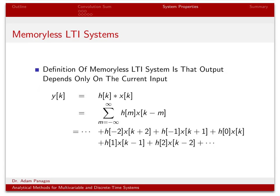One of the ways we can classify a system is if it's memoryless or not. The definition of a memoryless LTI system is that the output y[k] only depends on the current input. We know the output of a discrete time LTI system is related to the input via convolution — the convolution sum. If instead of writing it compactly as this infinite sum I actually write out all the terms, I can see how the output is related to the impulse response values and input signal values.